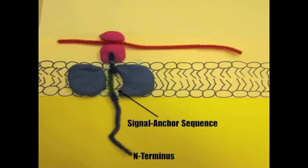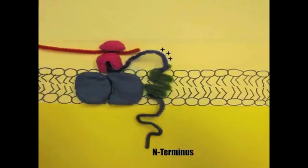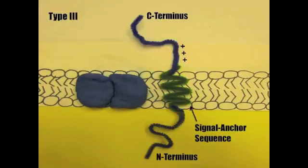For type 3 proteins, the assembly is similar to type 2 except that positively charged residues on the C-terminal side of the signal anchor sequence cause the transmembrane segment to be oriented within the translocon with its C-terminal portion in the cytosol and the N-terminal portion in the ER lumen. Chain elongation on the C-terminal side completes in the cytosol and the ribosomal subunits are released.